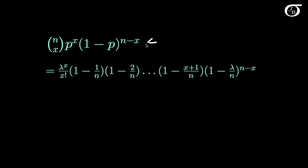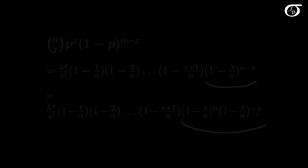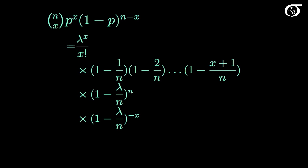We've rewritten our binomial formula as what we have here. Opening up one term further, we split it into its two components: 1 minus lambda over n to the n, and 1 minus lambda over n to the minus x. This is just another way of writing the equation on the last page, and we haven't done anything with limits yet.